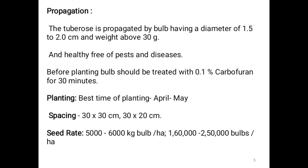Propagation: Tuberose is propagated by bulbs having a diameter of 1.5 to 2.0 cm and weight above 30 grams. Selected bulbs should be healthy and free of pests and diseases. Before planting, bulbs should be treated with 0.1% Carbofuran for 30 minutes.